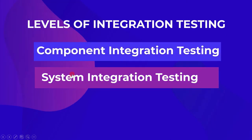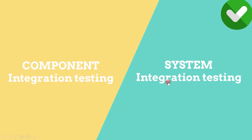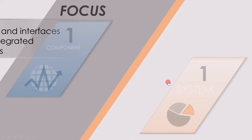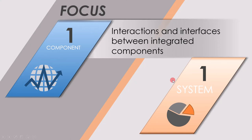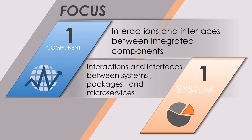Let's take a look at the levels of integration testing. As per the ISTQB foundation level syllabus, we have two integration testing levels. The first level is component integration testing, and the second level is system integration testing. Component integration testing focuses on interactions and interfaces between integrated components — we check interactions between two components. But in system integration testing, you check interactions and interfaces between systems, packages, and microservices — if there are multiple systems, we check the interaction between those systems.